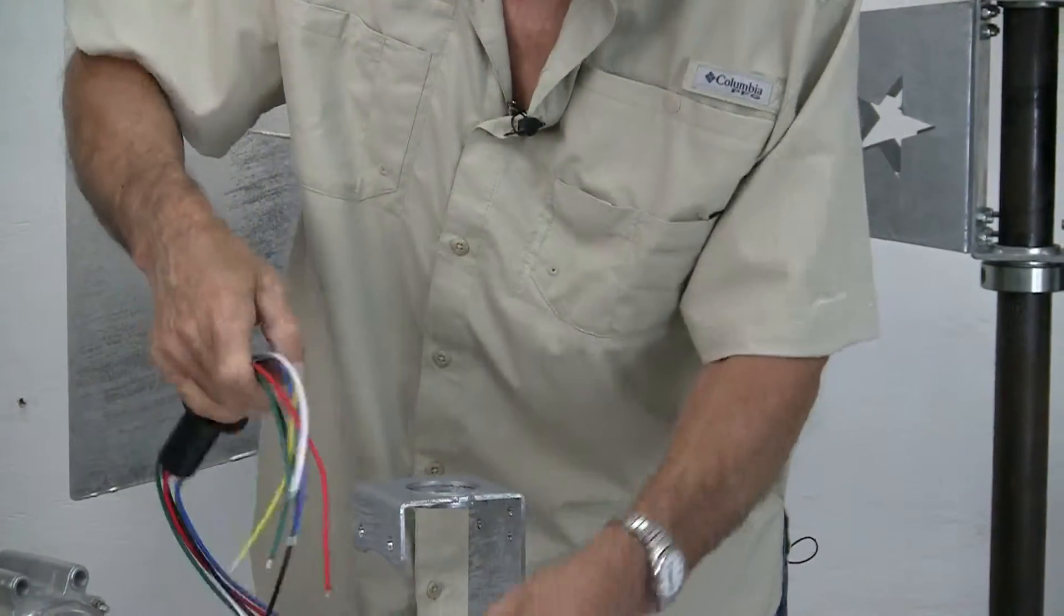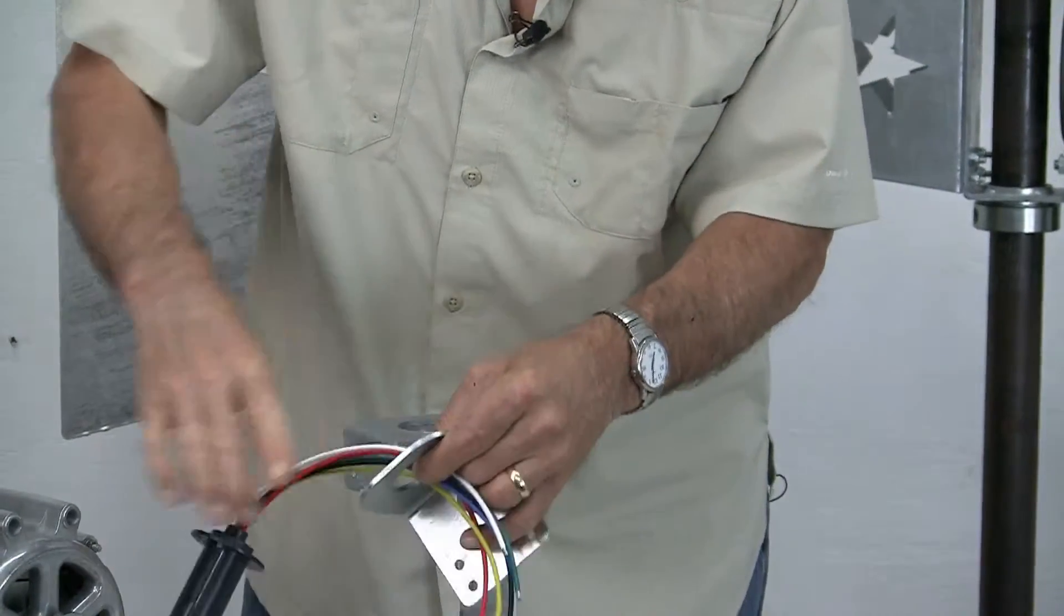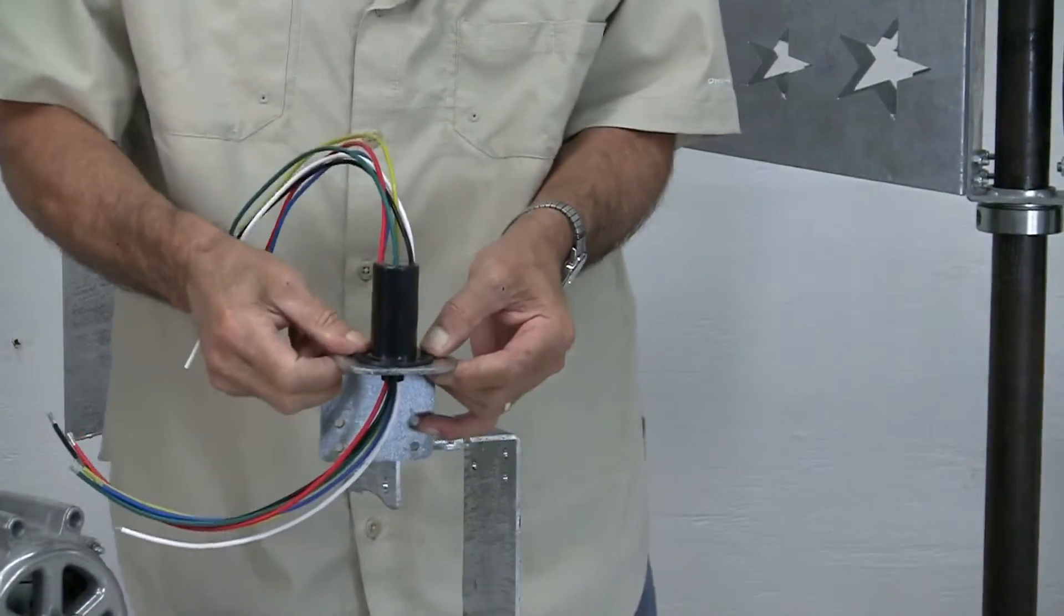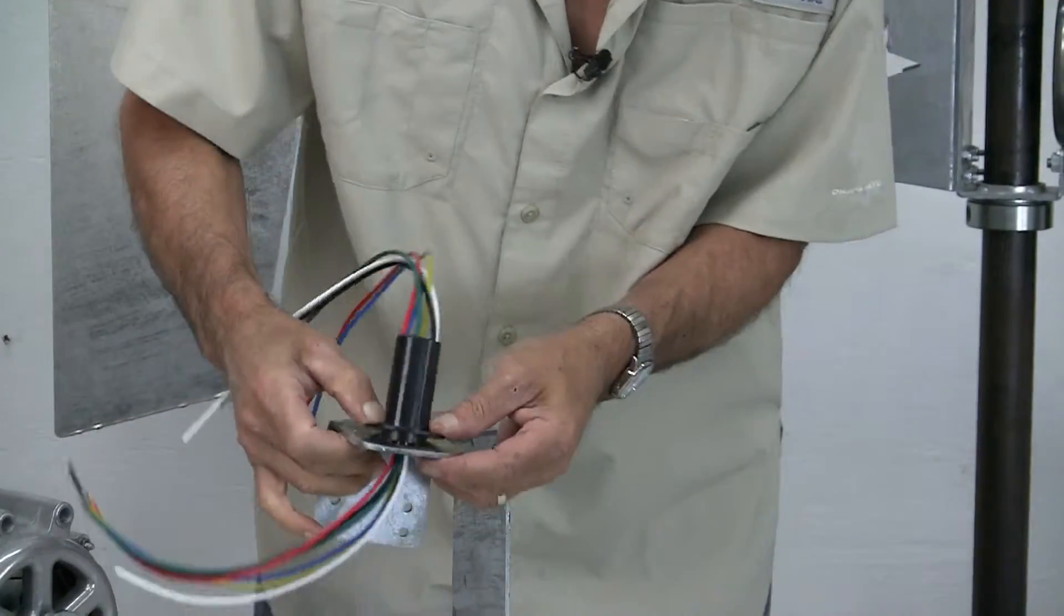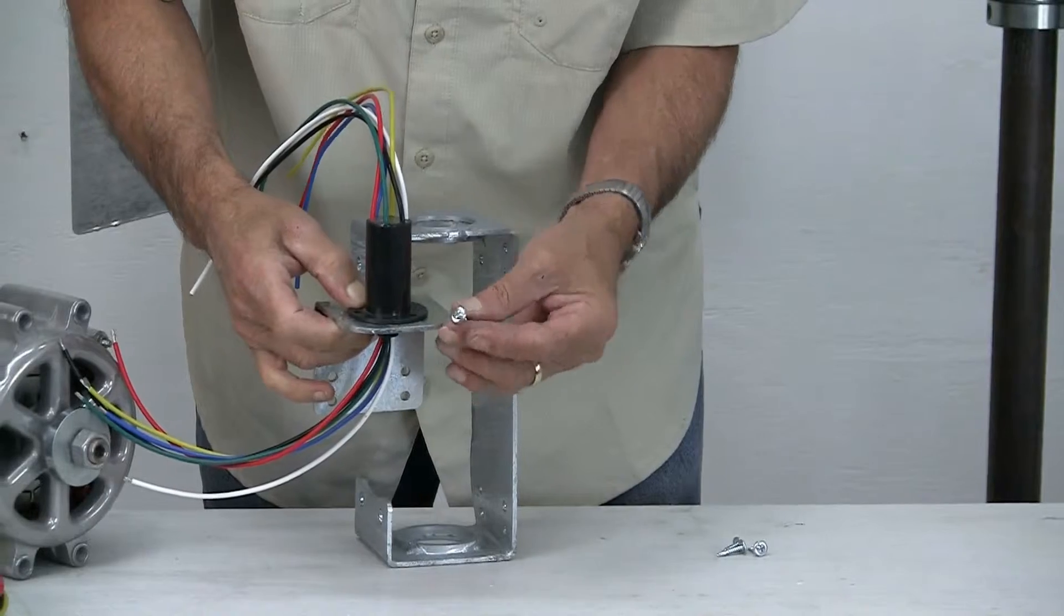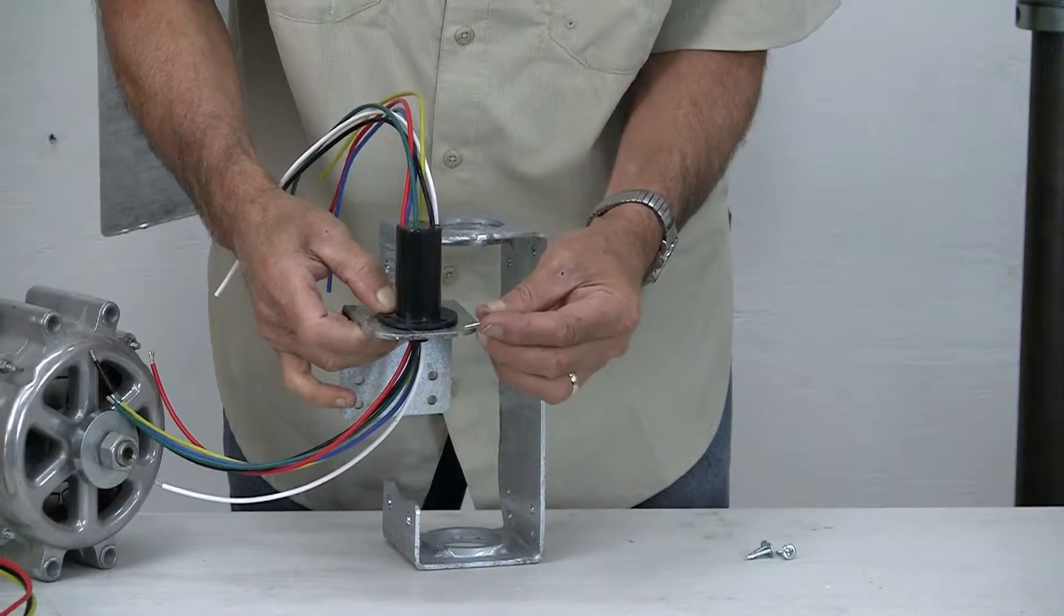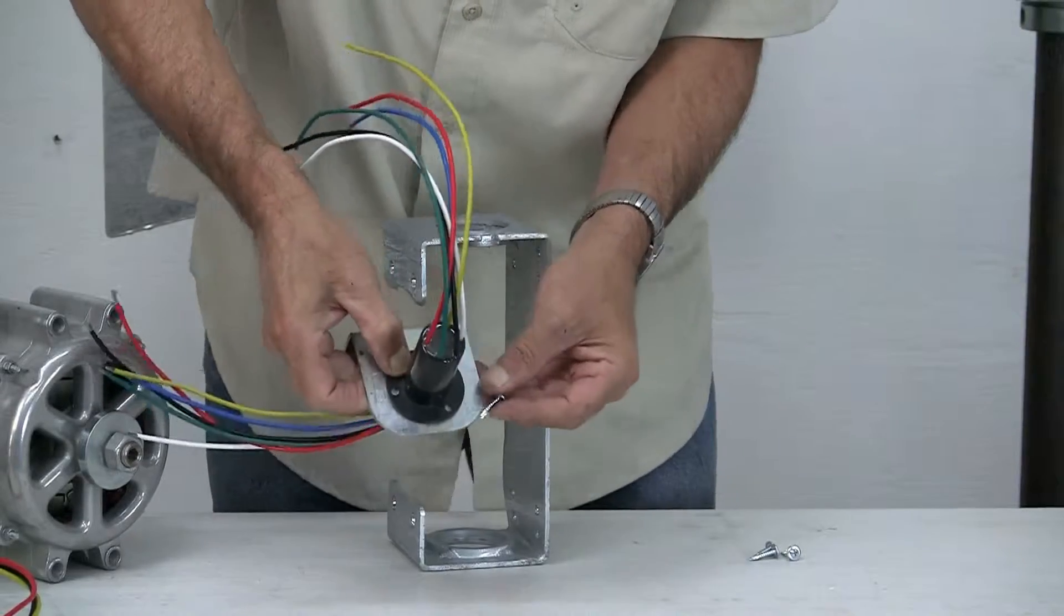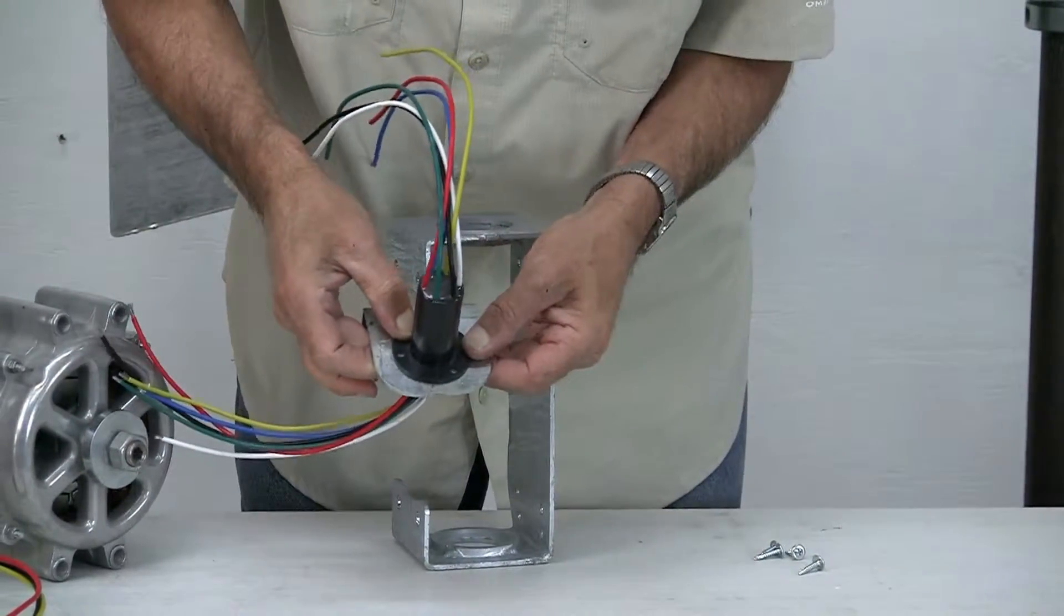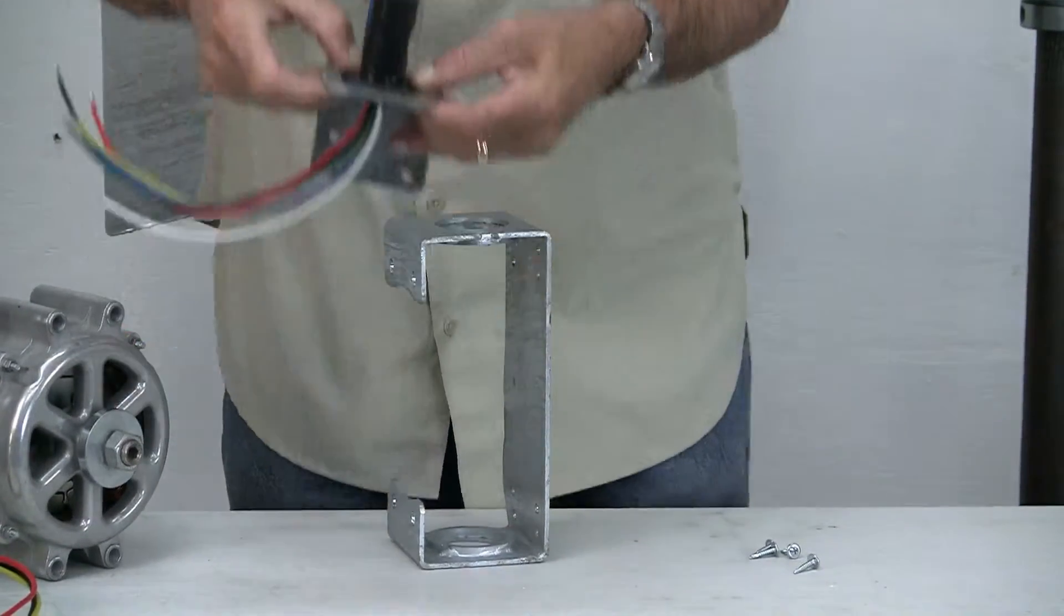Thread all the wires down through the hole, like so, and then get self-tapping screws like such. This is all I use to put this together. Shoot your self-tapping screws down through the slip ring, and there you go. You're ready to assemble it.